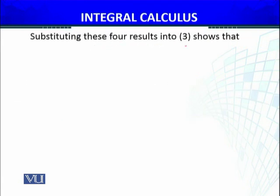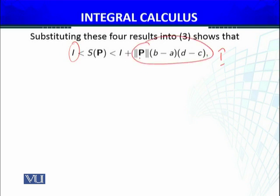Substituting these four results shows that I ≤ s(P) ≤ I + ||P||(b - a)(d - c). The first two terms give I, and the remaining terms satisfy this inequality.